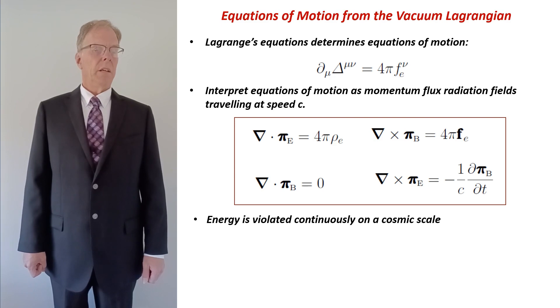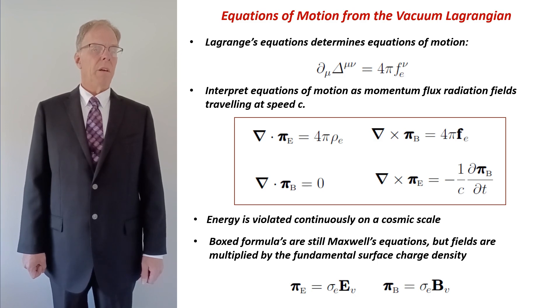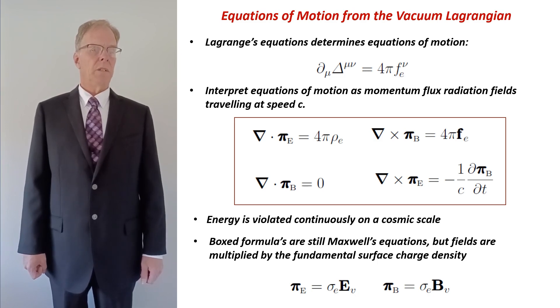To be clear, the fields in the red box are nothing more than electron Maxwell fields, E and B, except multiplied by a fundamental constant with units of surface charge density.